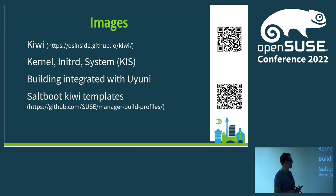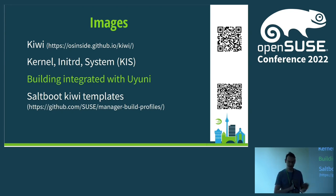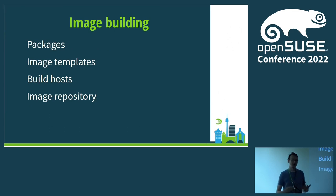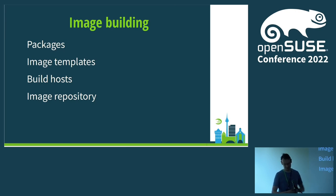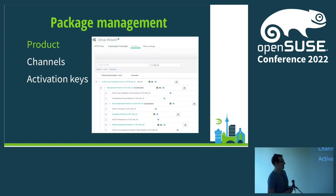All of this image building is fully integrated with Uyuni. When I want to build an image I need package sources, recipes for how the image should be built (the image templates), a place to build, and a place to store and download them from. With packages, we go back to Uyuni, where the package source for all of this is Uyuni. Uyuni has an interesting package management concept divided into three parts.